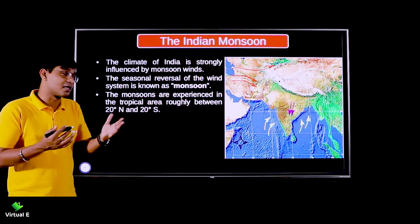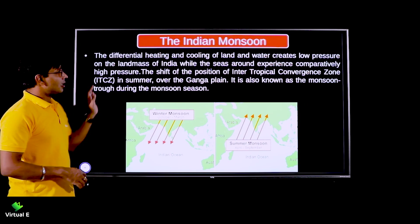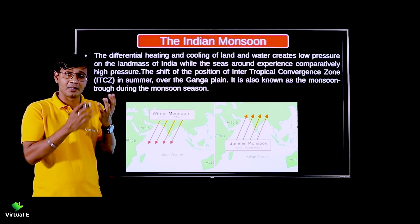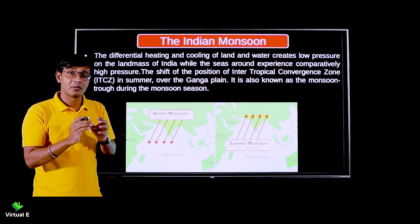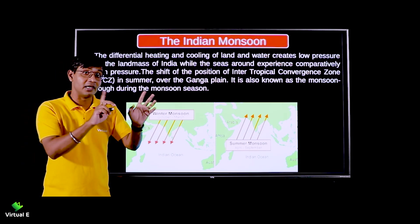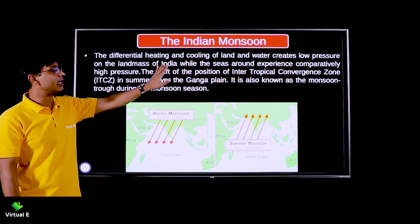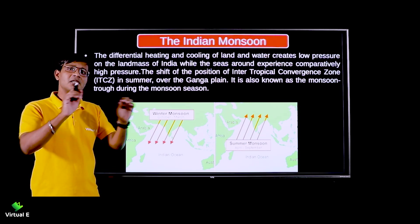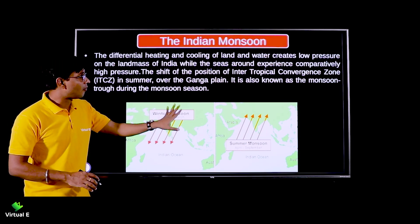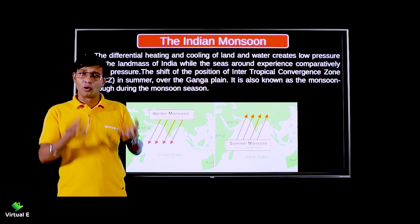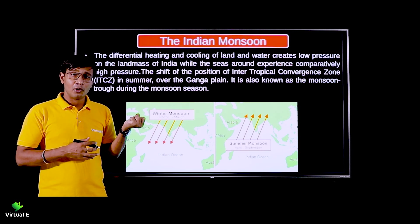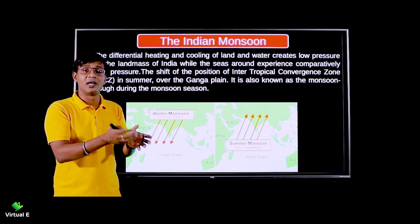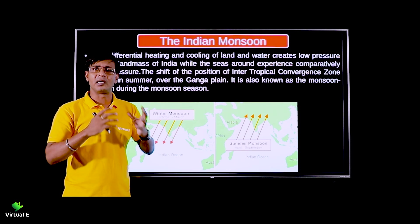Differential heating and cooling of land and water creates low pressure on the land mass. The land mass of India has low pressure - logic says it will suck in the winds. High pressure is in the ocean - near Madagascar, south of India, and in the Indian Ocean. Wind moves from high pressure towards low pressure.